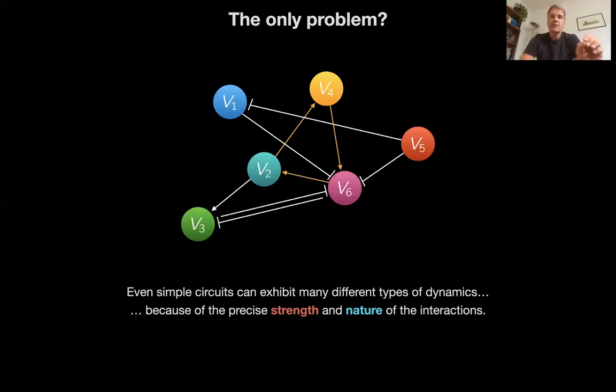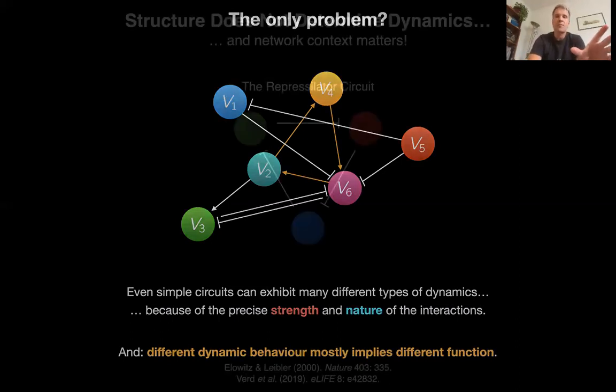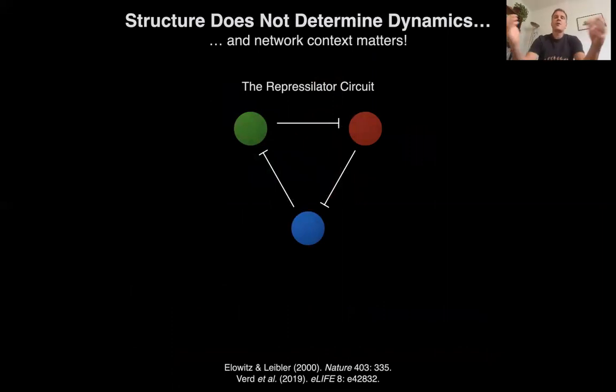What happens is that even this simple circuit will behave in many different ways, depending on the precise strength and also the nature of the interaction. So, it matters a lot whether this is a transcriptional interaction, translational, protein binding, whatever. The details matter in all these cases. And, of course, if you get a different dynamic behavior, depending on the nature and the strength of those interactions, you usually also get an effect on functions. So, if a circuit, a motive behaves in a different way, it also has a different function. Not always, not necessarily, but most of the time.